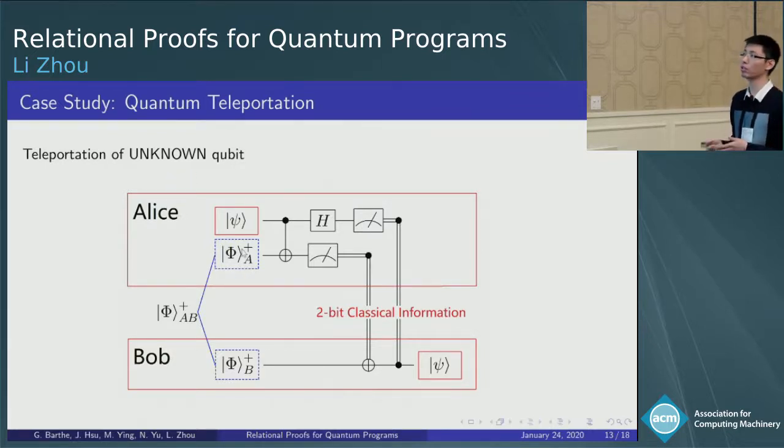And now Alice wants to send the unknown qubit Psi to Bob. And she first applies the CNOT gate and H gate, and then she measures these two qubits and sends the result, the two-bit classical information, to Bob. Note that after the measurement, the state collapsed, so the unknown state disappeared here.